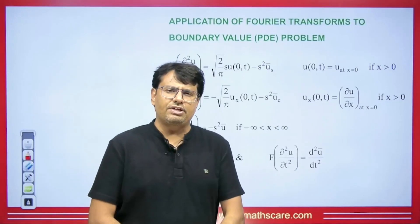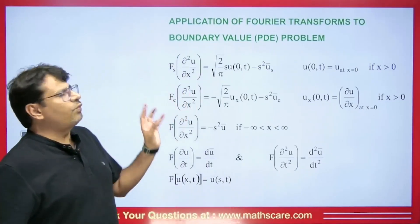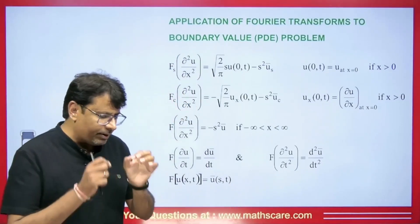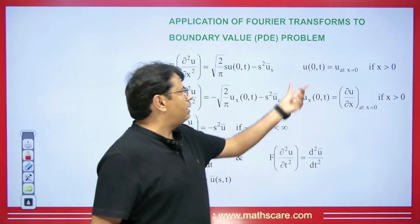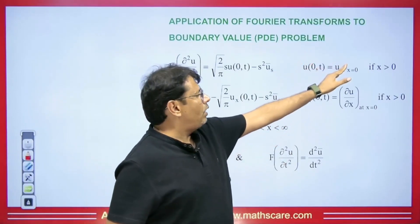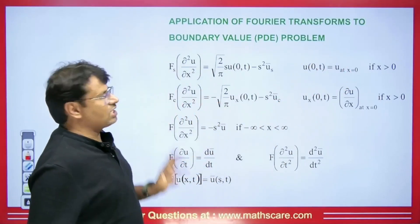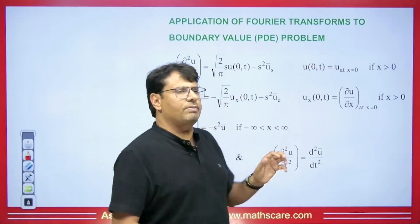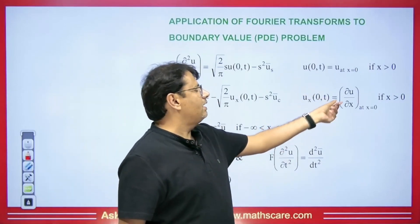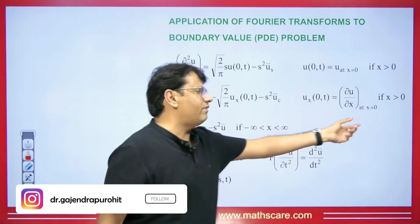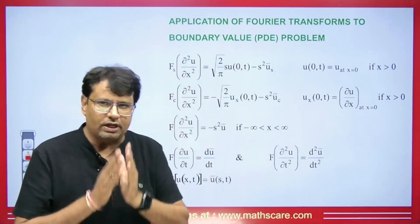If any partial differential equation is given — be it heat equation or wave equation — we can solve it using the Fourier transform, but there are some particular conditions. If within any question u(0,t) is given, or u at x=0 is given, then we apply the Fourier sine transform. If the derivative ∂u/∂x at x=0 is given, then we apply the Fourier cosine transform. I have already uploaded videos of this concept.